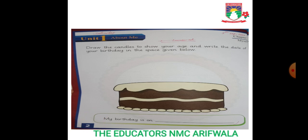For your homework: write the date, put your name, draw candles to show your age, and write the date of your birthday in the space given below. For example, if you are already four years old, draw four candles. Write 'My birthday is on' and then write the date — like August, September, or October. Finish your workbook homework.